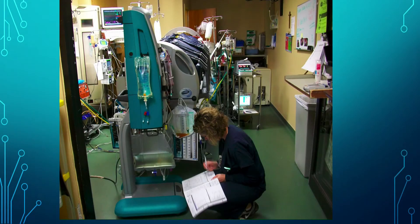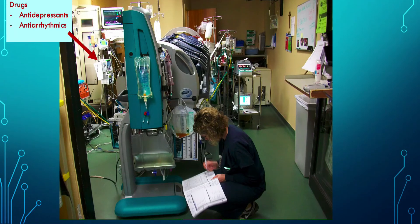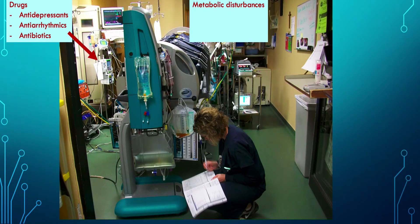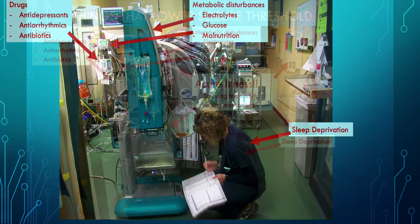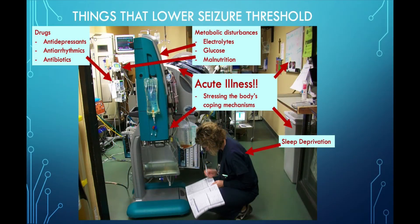So what lowers your seizure threshold? It's a lot of things that you guys are familiar with. The most common are drugs — antidepressants, antiarrhythmics, and antibiotics being the usual culprits. Metabolic disturbances such as electrolyte abnormalities, hypo and hyperglycemia, malnutrition, and of course sleep deprivation — the beloved Q1 hour neuro check. And we can't forget about acute illness. Anytime you stress out the body's coping mechanisms, you're going to open the door for bad things to happen.